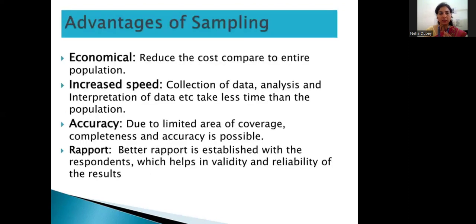The advantages of sampling: first, it is economical — it reduces cost compared to surveying the entire population. Going one-to-one to collect data is very time-consuming and costly, so sampling helps reduce the cost of obtaining representative data. Second, increased speed — collection, analysis, and interpretation of data takes less time than covering the full population. Third, accuracy — due to the limited area of coverage, completeness and accuracy are possible, and a better rapport is established with respondents, which helps in the validity and reliability of the results.